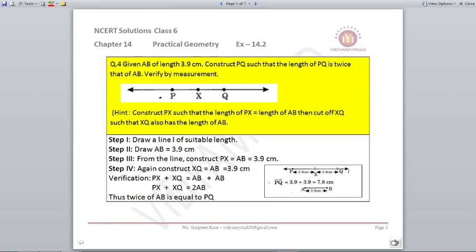Question number four: given AB of length 3.9 centimeters, construct PQ such that the length of PQ is twice that of AB and verify the measurement. Now here, we know AB as 3.9 centimeters, so you can draw a line. You can take your compass and draw another big line as L. Mark a point P on it.